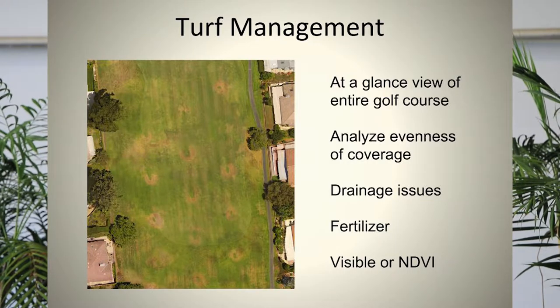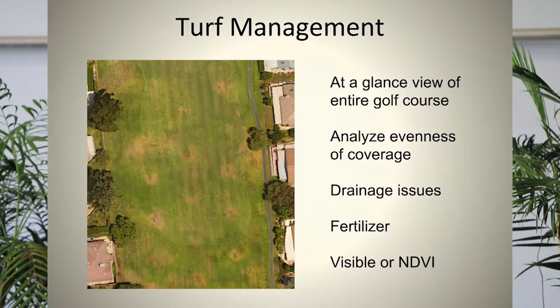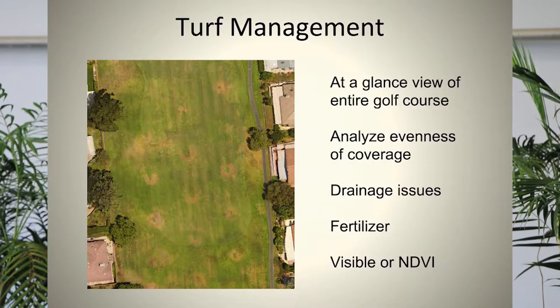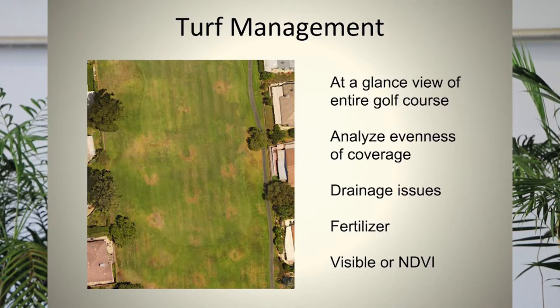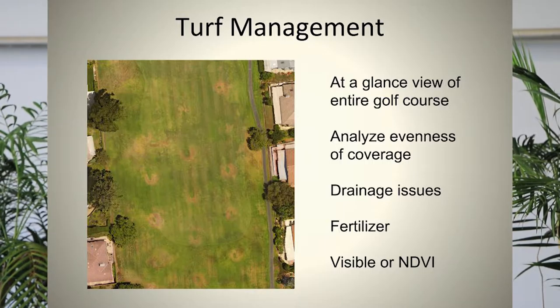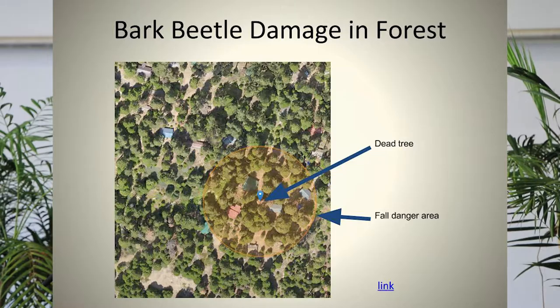Another area is turf management — golf courses — for water conservation. They're looking at the efficiency of their sprinkler systems. A turf consultant I spoke with said the first thing he does at a golf course is turn the water down 10% without telling anyone — the water bill goes down and nobody notices a difference. It's pretty universal that people overwater. Drone imaging gives positive feedback on what's actually happening, and lets you see the geometry of the course from above rather than walking or driving it.